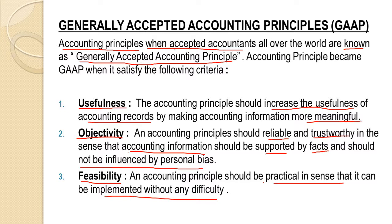Generally Accepted Accounting Principles (GAAP) are the accounting principles accepted by accountants all over the world. Accounting principles become GAAP when they satisfy three criteria. First is usefulness — the accounting principle should increase the usefulness of accounting records by making accounting information more meaningful. Second is objectivity — the accounting principle should be reliable and trustworthy, meaning accounting information should be supported by facts and should not be influenced by personal bias.